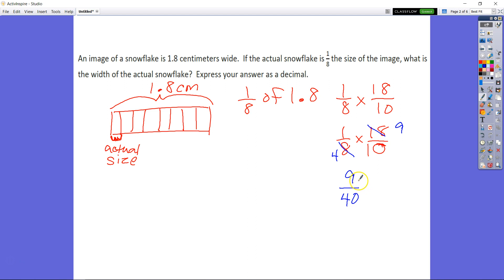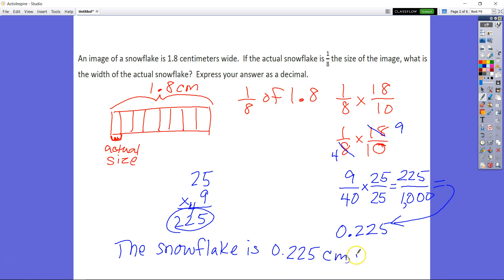I want to get this into a decimal form. So I have to multiply by something that's going to give me a denominator of 100, and I know it's going to be 25 over 25. 25 times 9 gives me 225. And as a decimal, it'll be 225 thousandths. So the actual snowflake is 225 thousandths of a centimeter wide.